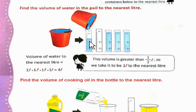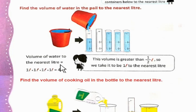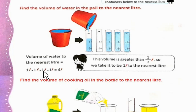इसमें liquid जो है वो 1/2 liter से ज्यादा है, तो हम उसका nearest liter 1 लेंगे. Volume of water to the nearest liter — हमने round up किया 1 liter. So, 1 liter + 1 liter + 1 liter + 1 liter. 1+1=2, 2+1=3, 3+1=4. Volume of water is equal to 4 liters.